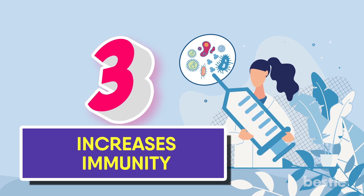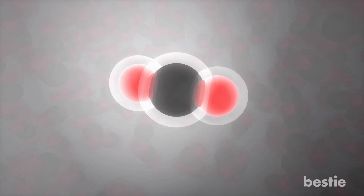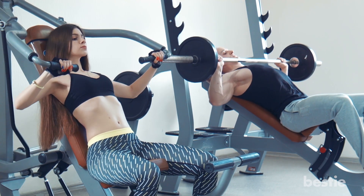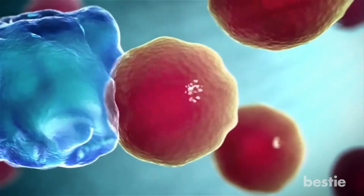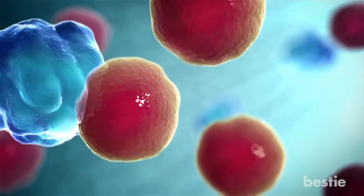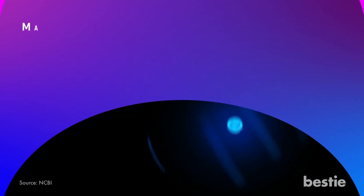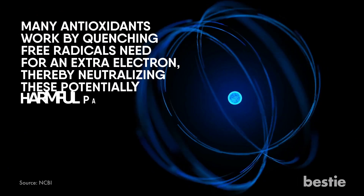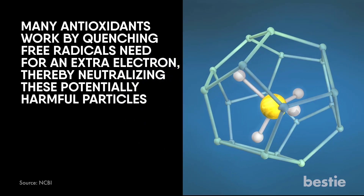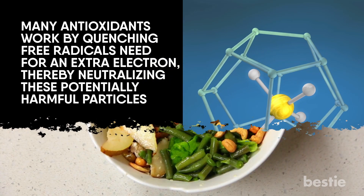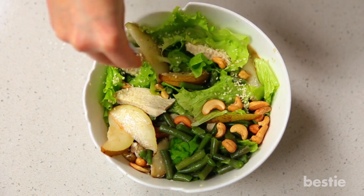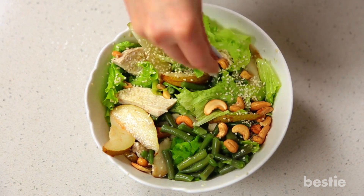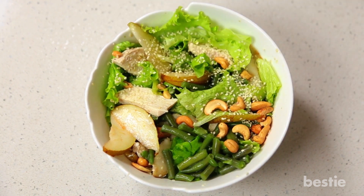Third, antioxidants increase immunity. Free radicals are naturally formed by the body during exercise and through various energy processes. At the same time, your body releases enzymes to keep these free radicals under control. Many antioxidants work by quenching free radicals' need for an extra electron, thereby neutralizing these potentially harmful particles. By eating antioxidant-rich food, you add an extra layer of protection to your body's natural defenses, helping ensure that the usual enzyme defenses don't get overwhelmed.